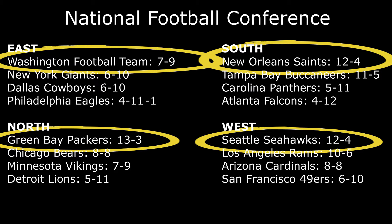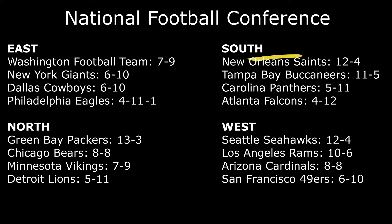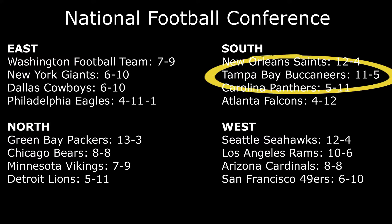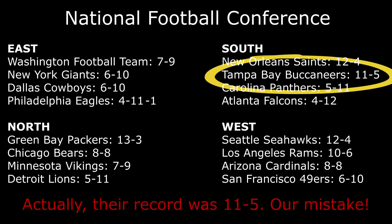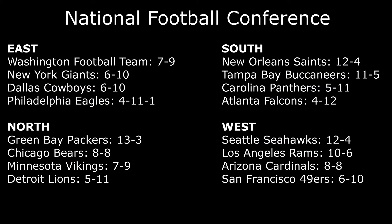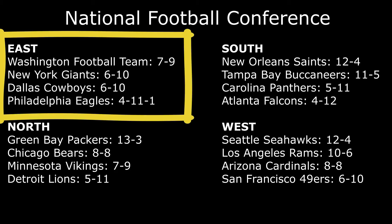Washington had a record of seven and nine — seven wins, nine losses. But the Buccaneers, who were in another division, had a record of ten and six. Washington was ranked higher than them, and that's because you take the top team out of each division. Our division was horrible this year. We had the best record out of our division, so the Washington Football Team was seeded in the fourth position because we were the top of our division.